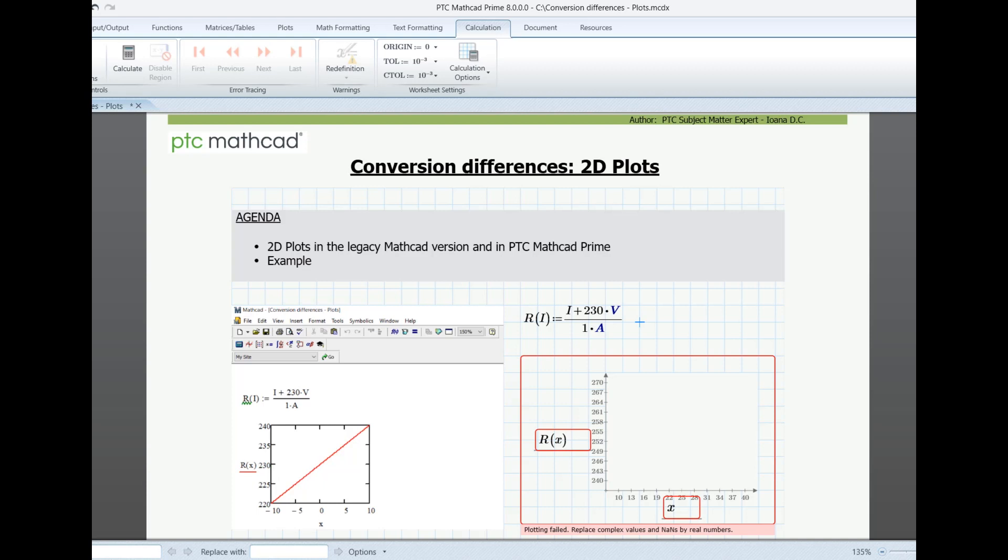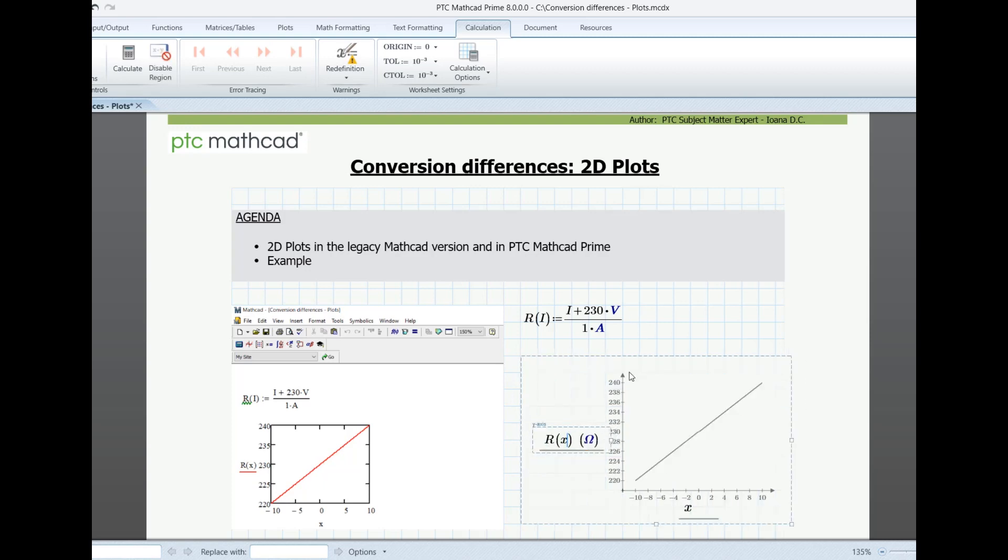Here you'll see the workaround for one of the conversion differences that appear when it comes to 2D plots. Sometimes, when you have units in plots in the legacy version of MathCad, after you convert a worksheet in MathCad Prime, you'll see an error message telling you that plotting has failed. In this case, it's not so clear what you should modify to get to the proper outcome. However, you can either multiply the function argument with the needed unit or you can add a range variable with units.